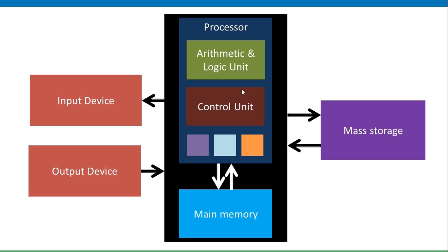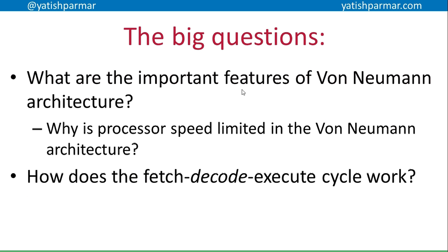To recap: Von Neumann architecture is a digital computer system with four parts — a processor with arithmetic and logic unit and a single control unit, main memory for holding programs and data in use, input and output devices, and mass storage for storing programs and data. You should be able to think about what the features of Von Neumann architecture are and why speed is limited — a single instruction at a single time because of a single bus creates a bottleneck. The fetch, decode, execute cycle: fetch the instruction, figure out what it's doing using the control unit, then carry out that instruction. Thank you very much — Mr. Palmer finishing off here. I will put up another video shortly on processor architectures.